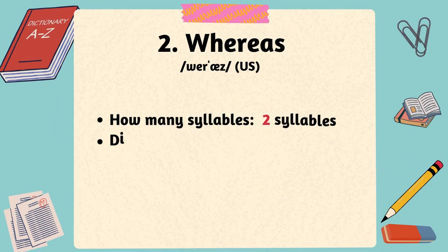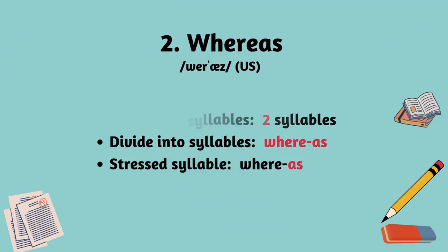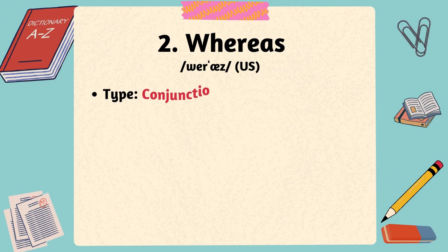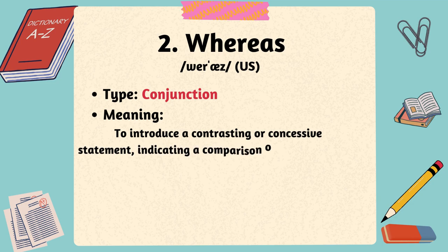The second word is whereas. The word whereas has two syllables, with the stress on the second syllable. Whereas is a conjunction in English, and it is often used to introduce a contrasting or concessive statement, indicating a comparison or opposition between two clauses or ideas.